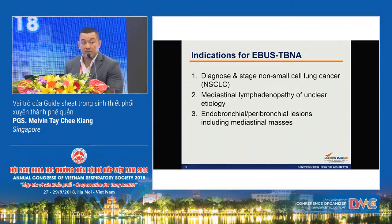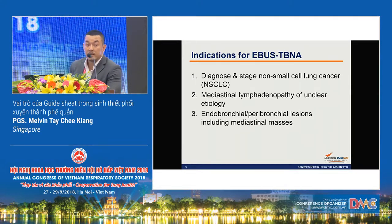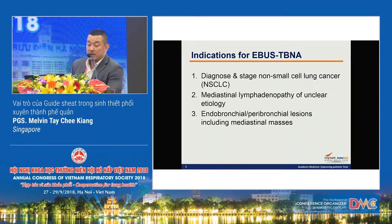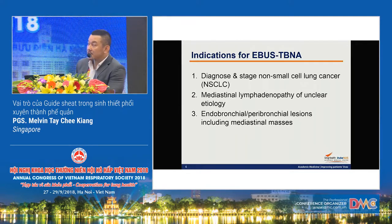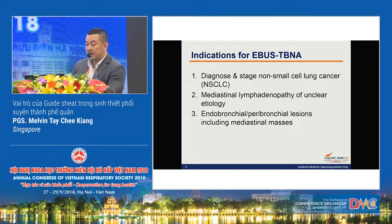The common indications for EBUS TBNA are: number one, to diagnose and stage non-small cell lung cancer; number two, mediastinal lymphadenopathy of unclear origin, which can include infectious as well as inflammatory causes; and of course endobronchial as well as peribronchial lesions, including mediastinal masses.